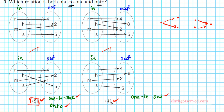Let's check option 4. Is this an onto function even though it's 1-to-1? 4 has R, 8 has H, 2 has M, 5 has S — but 1 has nothing pointing to it. So this function is not onto because 1 has no input pointing to it. That shows us that the answer is option number 2.